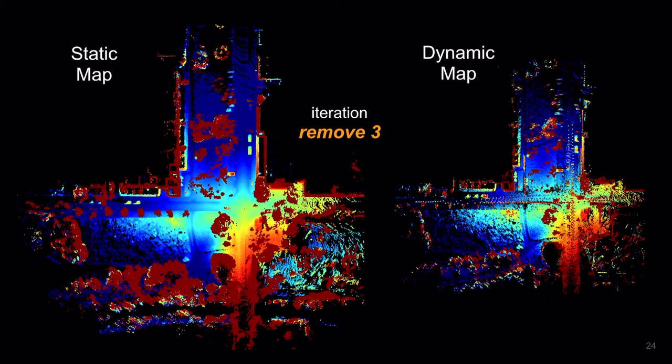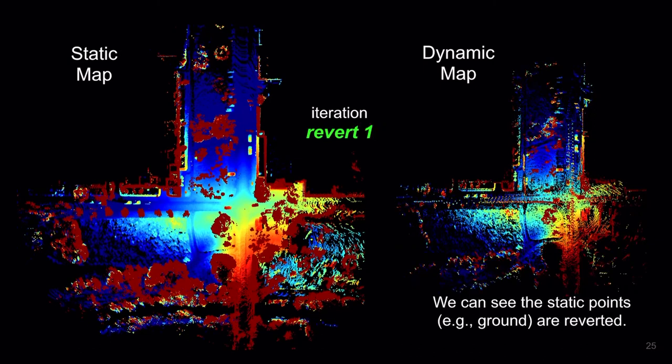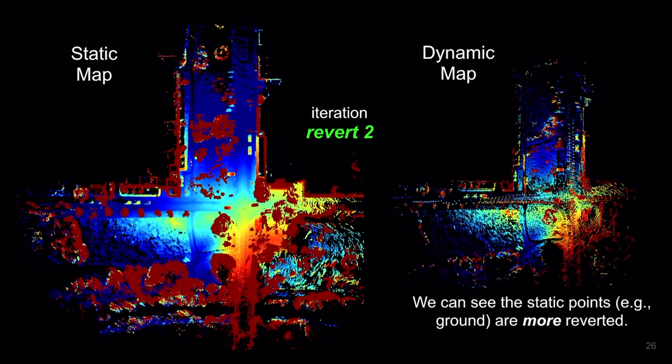From the next slide, we'll do the revertings. The first revert. We can see that many static points are reverted, while the dynamic points were retained in the dynamic map. This is the result from the second revert.